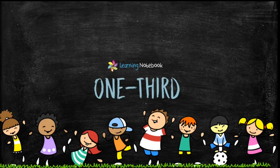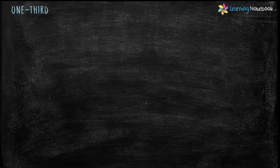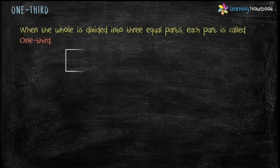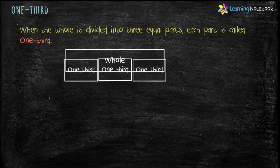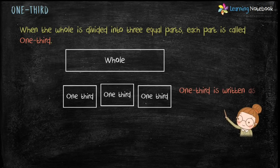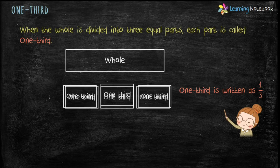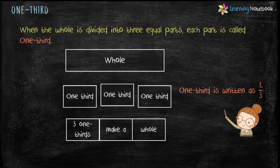Now let's see what is 1 third. When the whole is divided into three equal parts, each part is called 1 third. 1 third is written as 1 by 3. And students, three 1 thirds make a whole.